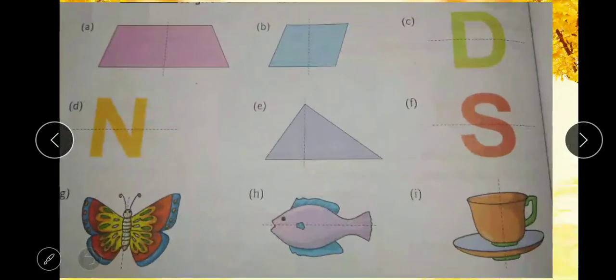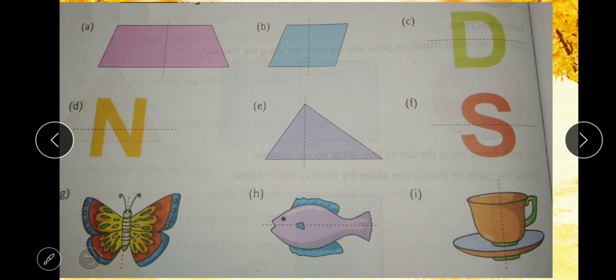Now, here is an exercise. So, tell whether the given figure are symmetrical or not. So, in the A part, we can clearly see that the dotted line is dividing the shape into two equal parts. So, yes, it is a symmetrical shape.